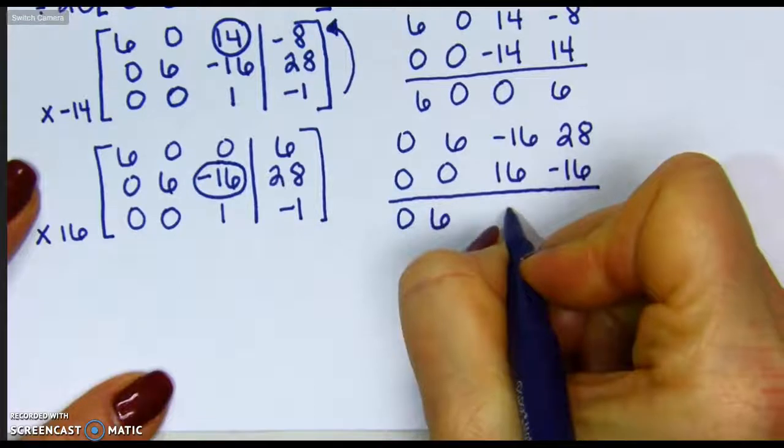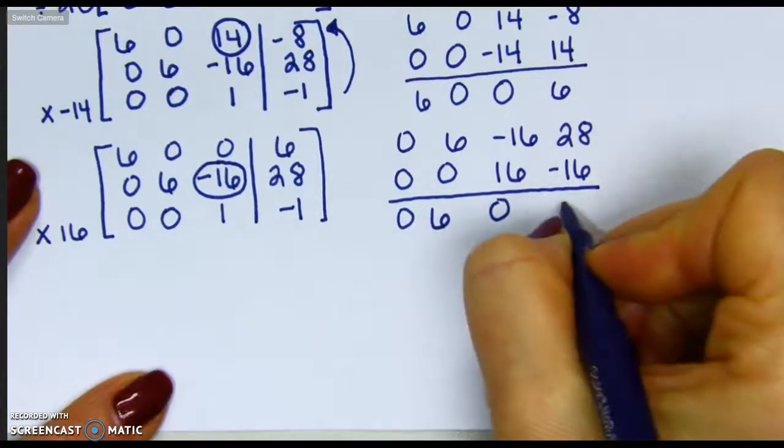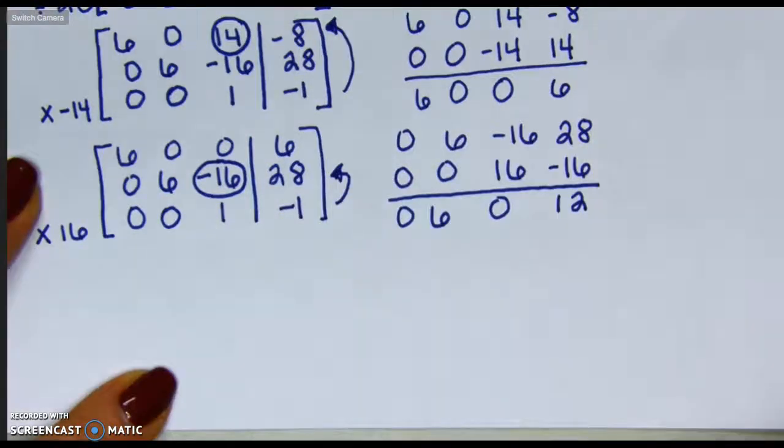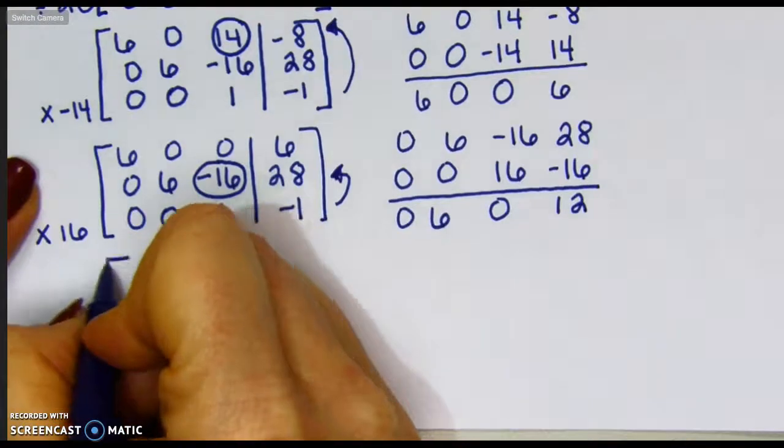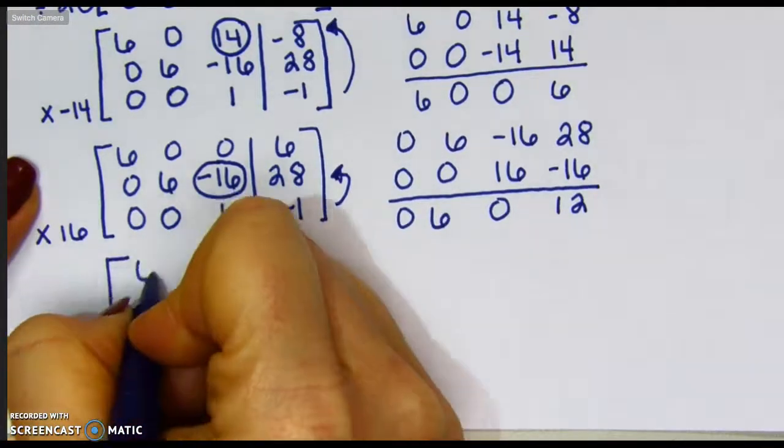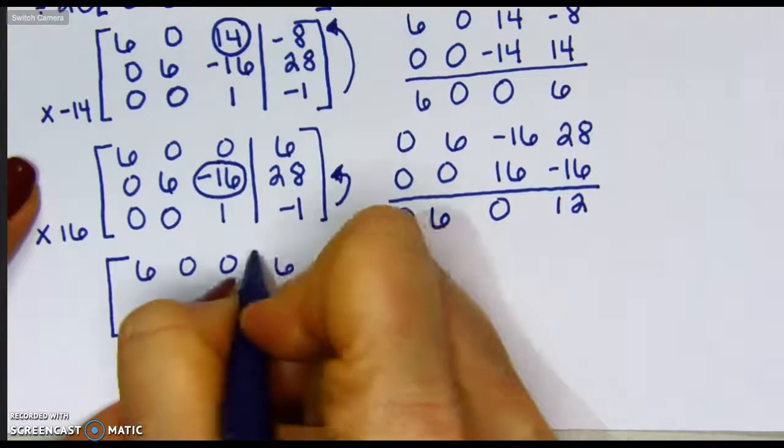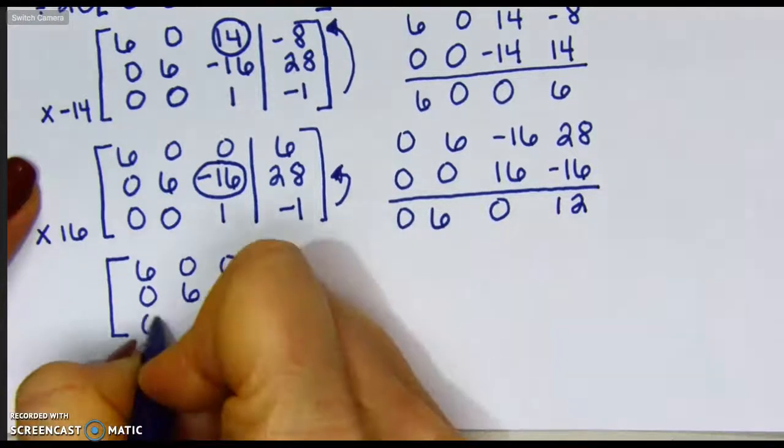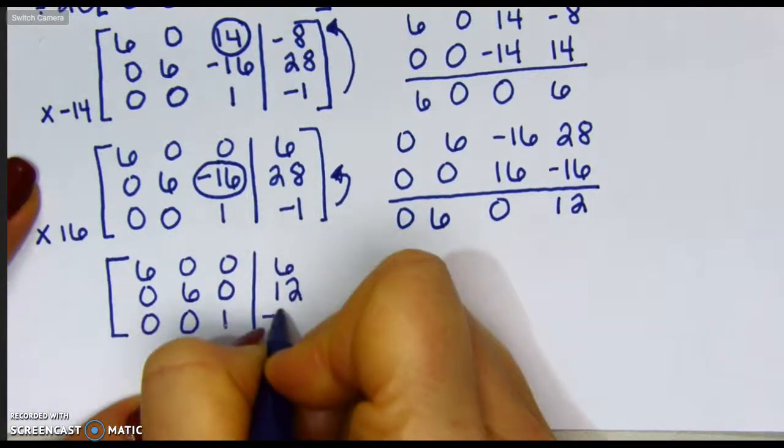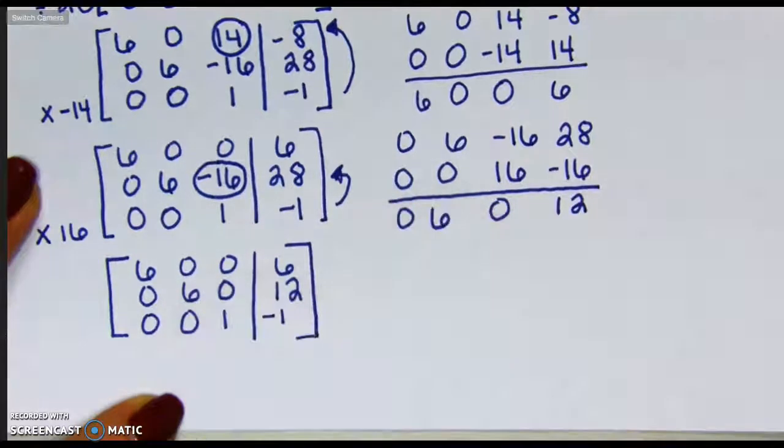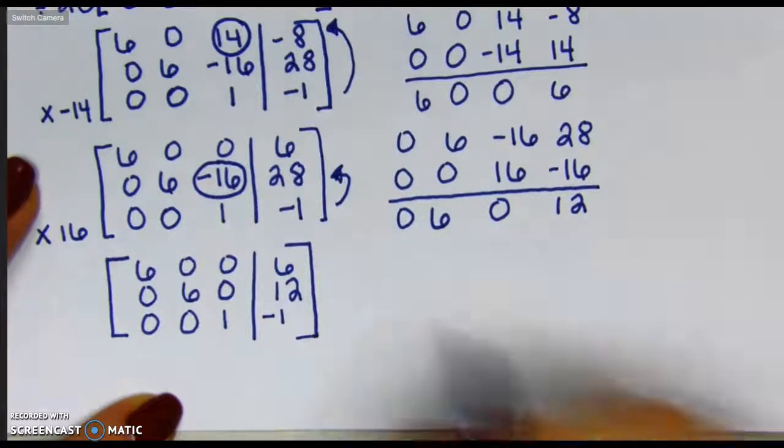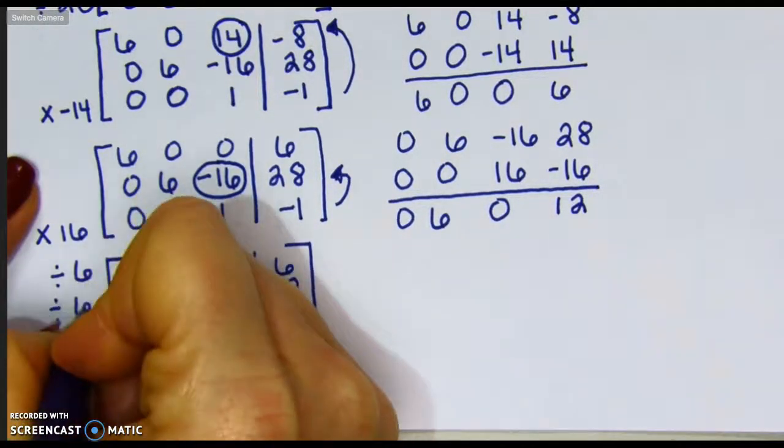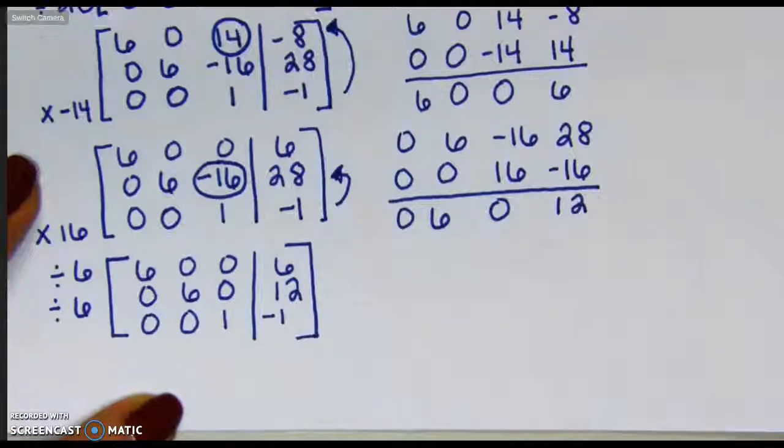So I have 0, 6, 0, 12, and we're adding up because we're going to replace that middle row. The final step, we need to get our diagonals into 1s. So I'm going to divide my top and my middle row by positive 6, both by 6.